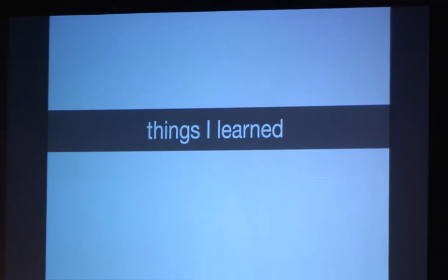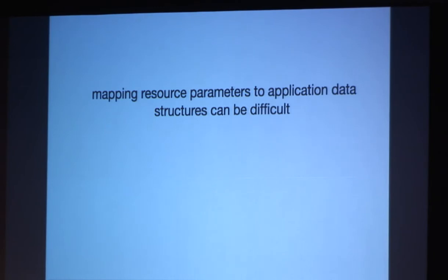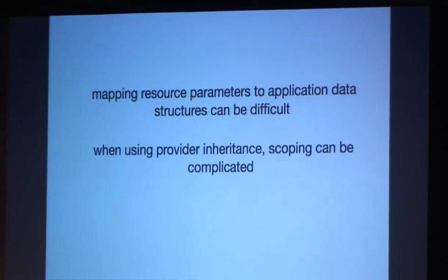And here's a few things I've learned by doing this. So mapping resource parameters to application data structures can be difficult. For example, we ran into this with iptables, where you need to correctly map out what your parameters are going to be and how they fit in with the application you're managing. So we were trying to determine how to correctly map jump and all of the different parameters that iptables would take. And that was a huge issue for us. We're still trying to determine how to do that for other providers. And the other issue we ran into a lot was scoping can be really complicated, especially when using provider inheritance. So again, in the case of the firewall module, we have a base firewall provider, and iptables and ip6tables actually inherit from that. So you'll see a lot of self.class.foo trying to figure out where exactly in scope you are.